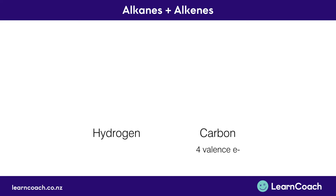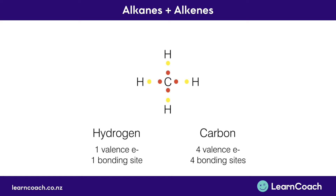Now if we talk about it in terms of electrons, we know that carbon has four valence electrons, which you can see here in red — those are our four bonding sites — and hydrogen has one valence electron, shown in yellow, so there's only one bonding site. You can see the electrons all come together as the yellow moves closer to the red, so they're bonded covalently because they're sharing valence electrons. As we know from our basics video, there must be eight electrons in carbon's outer shell for it to be stable, and if you count, we've got eight here, so that's stable.